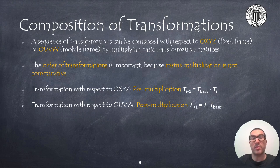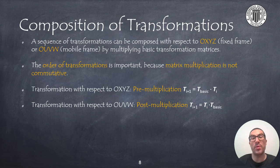In the case of performing a transformation with respect to the Oxyz fixed frame, we must apply a pre-multiplication, which means that to the current transformation matrix, we must pre-multiply a basic transformation matrix. On the other hand, if the transformation is performed with respect to the Ouvw mobile frame, then the resulting transformation matrix is the result of post-multiplying the current transformation matrix with the basic transformation matrix we want to apply.